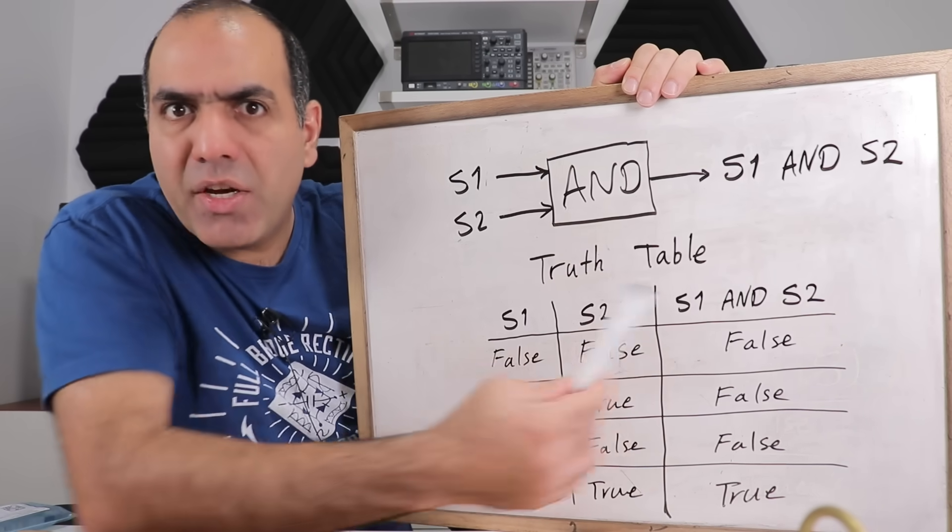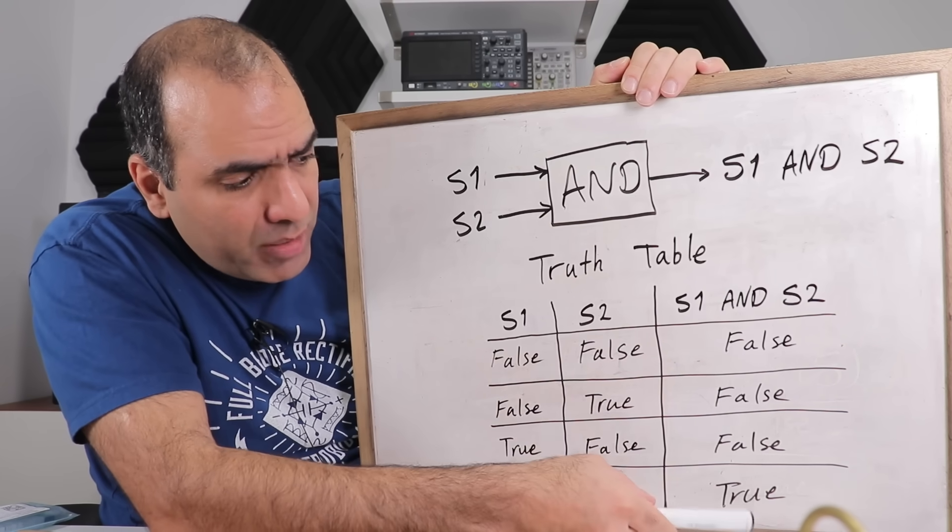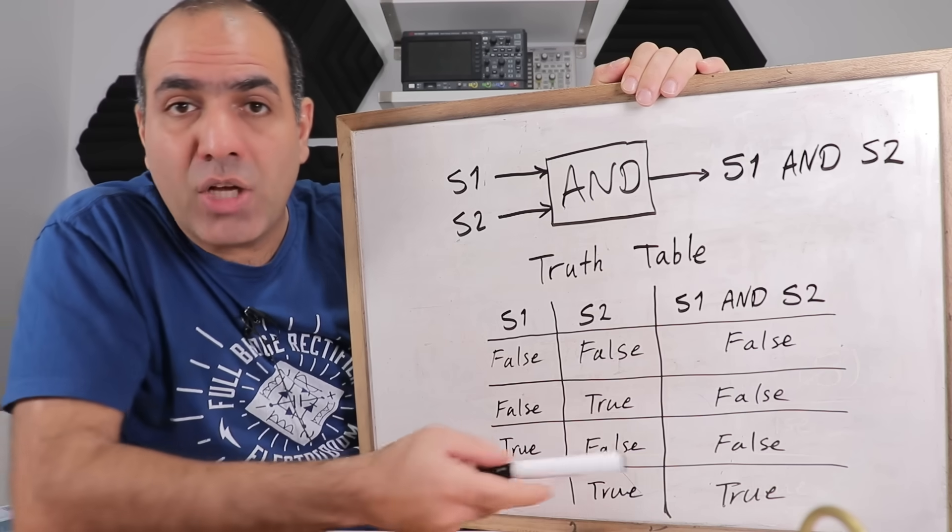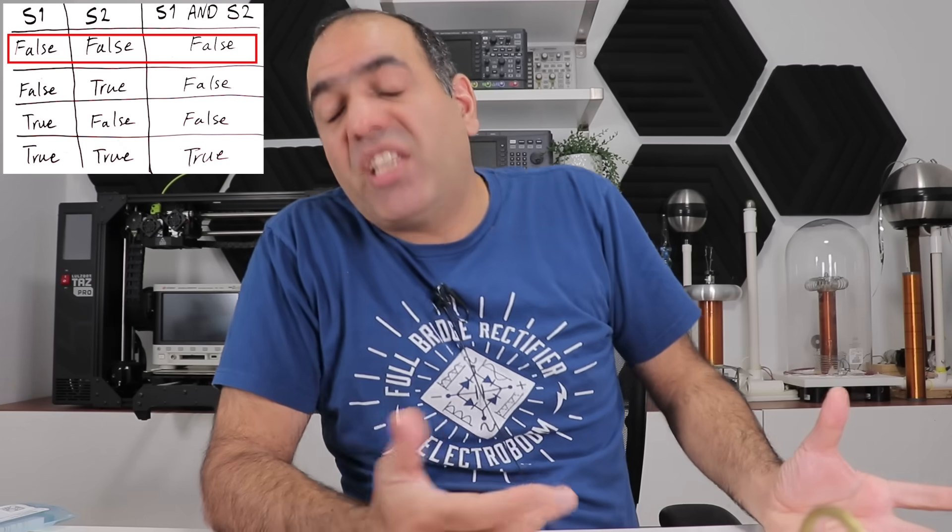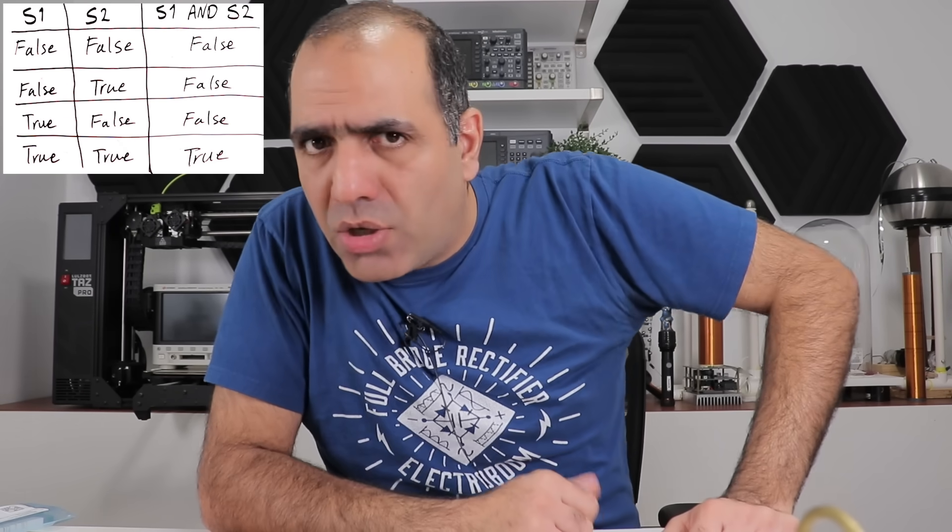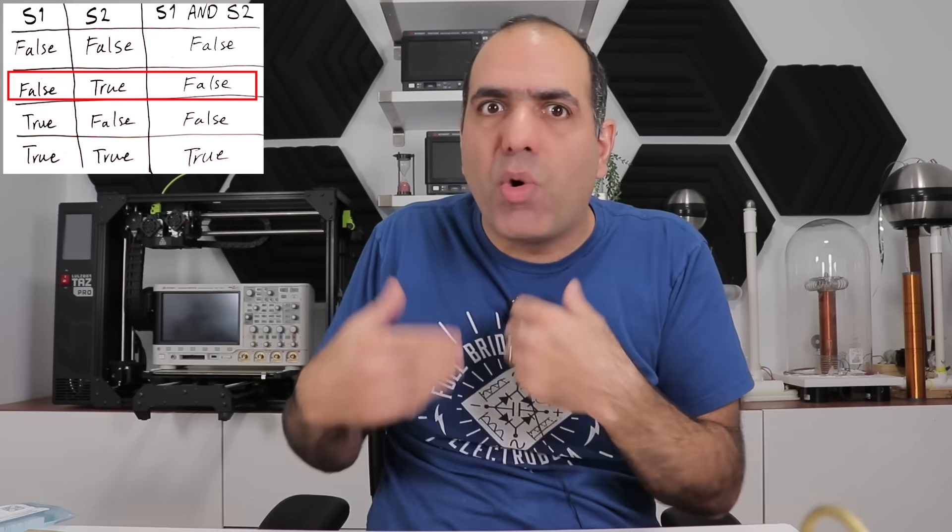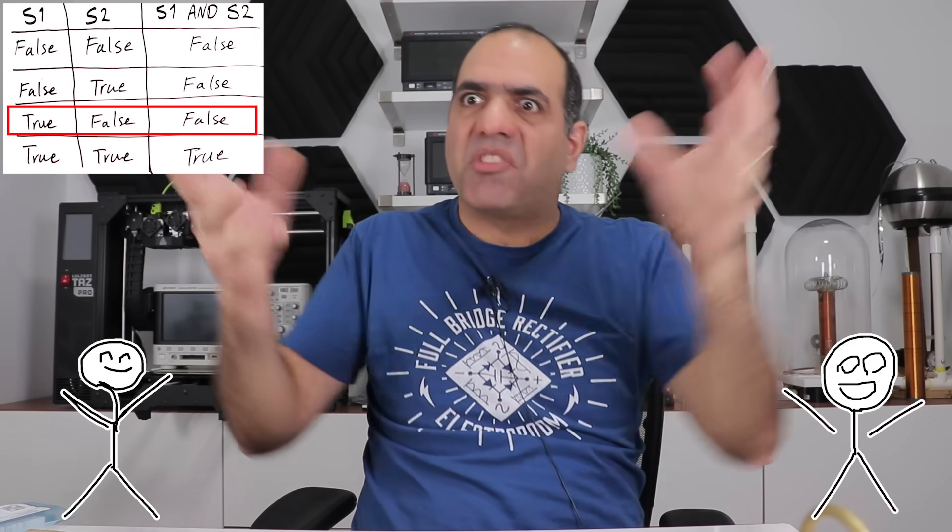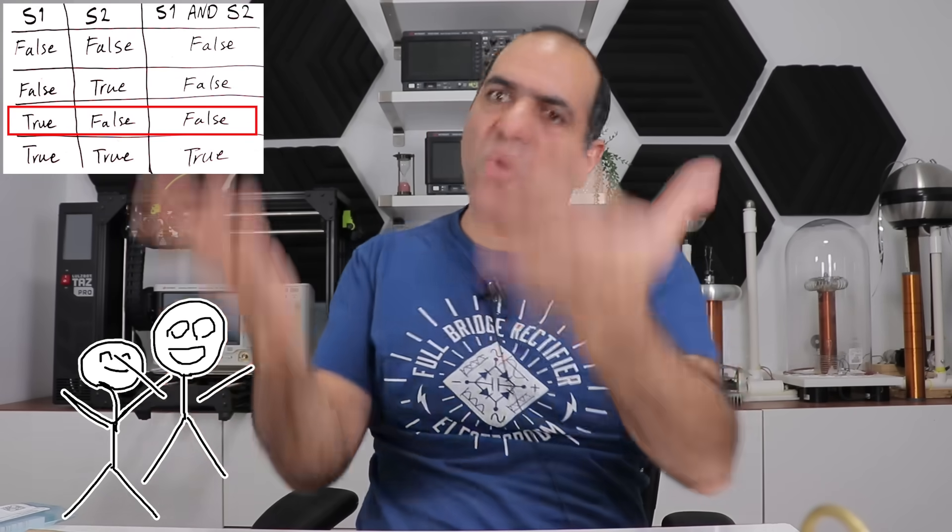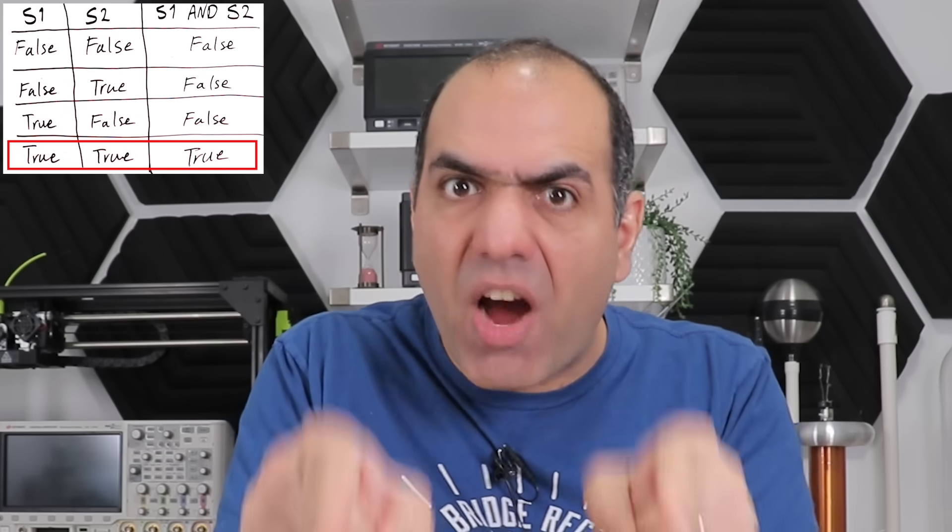The basic AND combines two statements into a new bigger statement that can only be true if both original statements are true. For example, I will find you and I will kill you. So if I don't find you, I naturally won't kill you, then it was a false promise. Also if I don't find you but kill you, like accidentally run you over without knowing it was you, still false. Also if I find you but for some reason we become best buddies and I don't kill you, that makes it false.